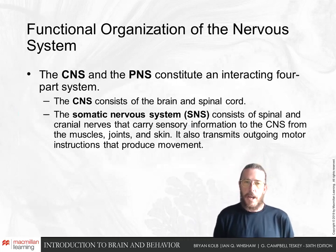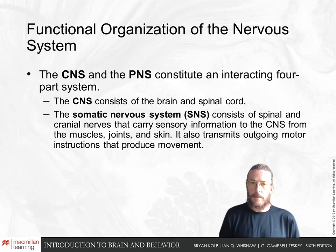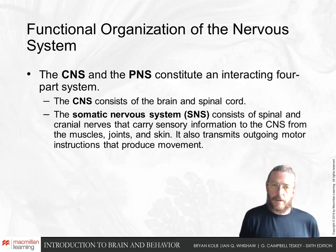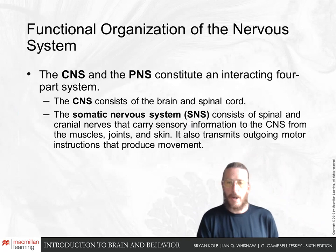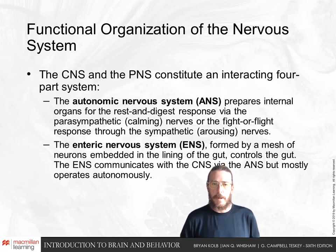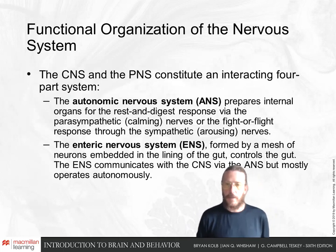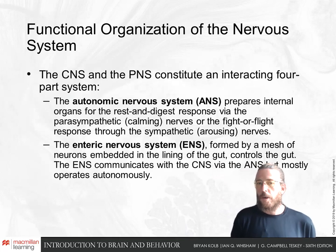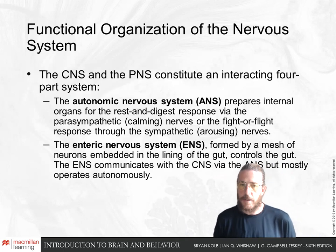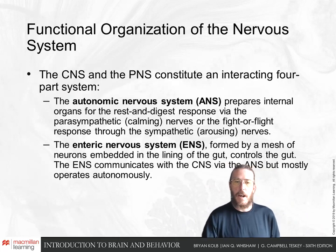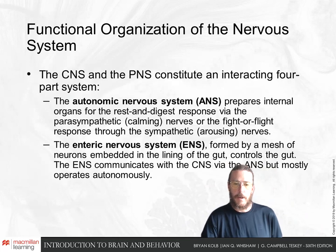The CNS and PNS together constitute this four-part system: the brain and spinal cord; the somatic nervous system, which carries information to and from our body; the autonomic nervous system, which prepares us to either rest and digest via parasympathetic connections, or fight or run away using the sympathetic arousing nerves controlling our organs; and the enteric nervous system, which communicates to our central nervous system the state of our metabolism.